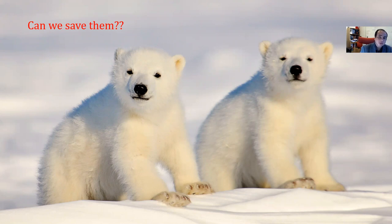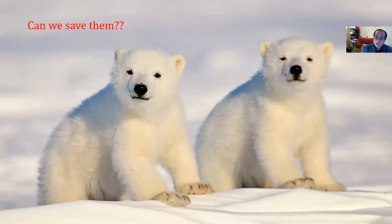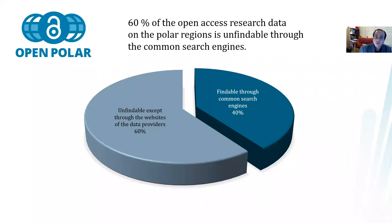Scientists and researchers who are trying to answer such questions and similar questions related to climate change and environmental impact rely heavily on comparing their research data to existing data in order to understand what is going on. However, 60% of the open access research data on the polar region is unfindable through common search engines. It's very difficult for researchers and scientists to find existing open access data to compare to their own data.